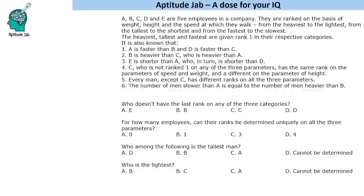Welcome to Aptitude Jab. This question is based on comparison and ranking of people on different parameters. There are five employees A, B, C, D, and E, ranked on the basis of weight, height, and speed. The heaviest, shortest, and fastest person is given rank one, and the worst person rank five.